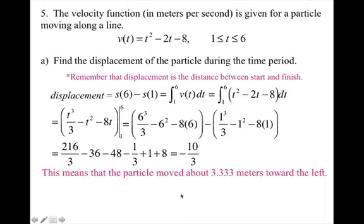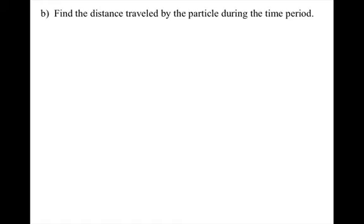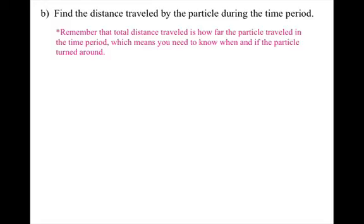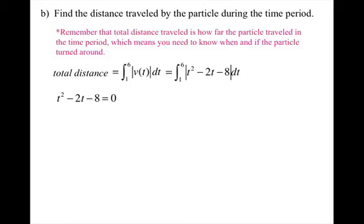All right, now I do have a part B for this problem. Now, find the distance traveled by the particle during the time period. So that means that you want to find the total distance traveled, and that is how far the particle traveled in the time period, which means you need to know when and if the particle turned around. Total distance actually represents the integral from 1 to 6 of the absolute value of V of t. So when a particle turns around, we know that's when the velocity equals 0. So I'm going to first find when the velocity equals 0. I'm setting the velocity equal to 0. I can factor it, and I get t equals 4 and t equals negative 2.